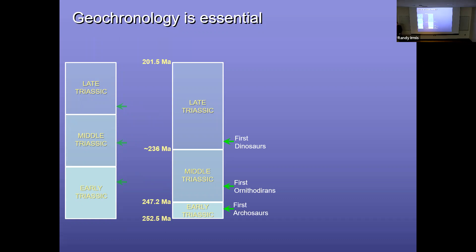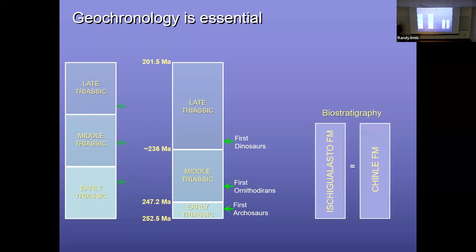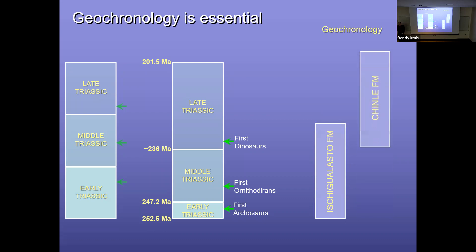And it can fundamentally change ages themselves, as well as correlation between different study areas. So here's two different formations, one from Argentina and one from the western U.S. And in the past, biostratigraphy suggested that they were roughly equivalent in time. But with uranium-lead geochronology, we've actually seen that one of these is almost completely younger than the other in time. And so it's totally changed how we then interpret the patterns we're seeing between these two different formations.